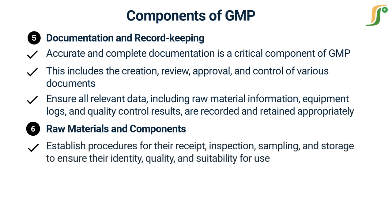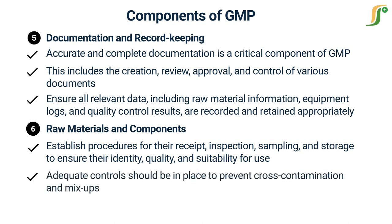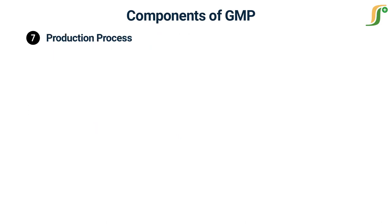The sixth component is Raw Materials and Components. GMP emphasizes the need for strict control over raw materials and components used in the manufacturing process. This involves establishing procedures for their receipt, inspection, sampling, and storage to ensure their identity, quality, and suitability for use. Adequate controls should be in place to prevent cross-contamination, mix-ups, and contamination of raw materials during handling and storage.